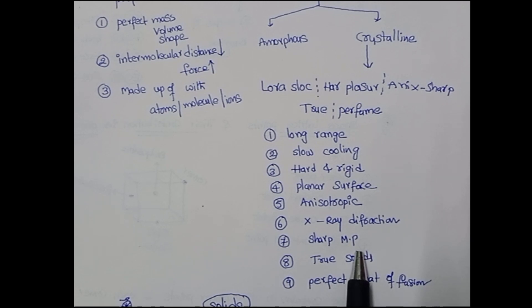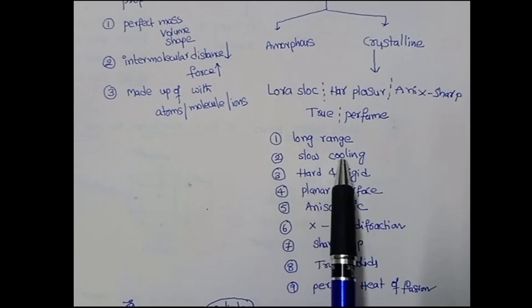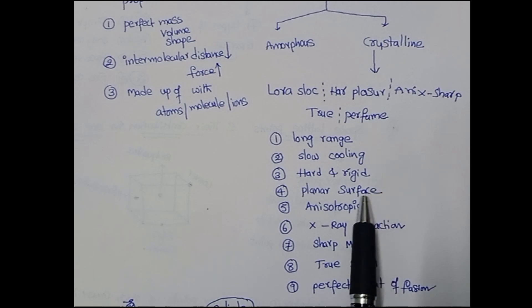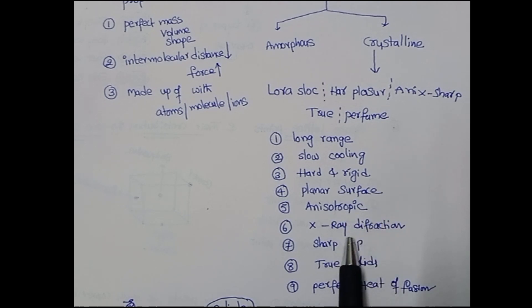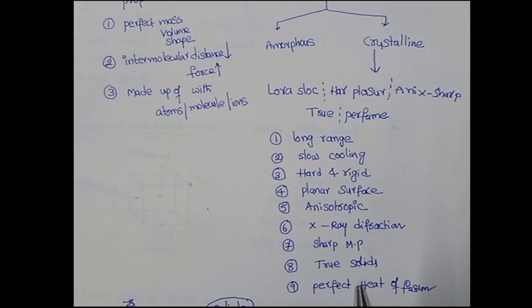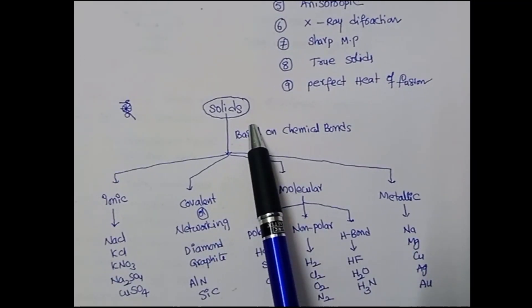Crystalline solids are called true solids and have a perfect heat of fusion, which is similar to their melting point. The exact opposite is amorphous solids. Amorphous solids are available through short-range order, formed by sudden cooling. They are soft substances with jagged surfaces, show isotropic properties, X-ray diffraction is not available, melting points are not sharp, and they are called pseudo solids or super-cooled liquids. Heat of fusion is not perfect.